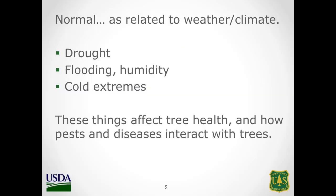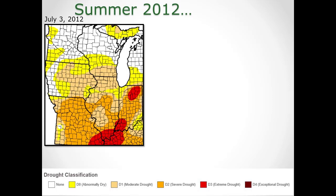I want to talk about what's normal as it relates to weather and climate. I'm not going to talk about climate change, but things outside of normal really interact with our insect and disease problems. Drought is huge; on some sites, flooding is huge. Even the distribution of rainfall and how long leaf surfaces are wet in the spring matters. Rainfall patterns that differ from normal can allow outbreaks of different disease problems. And cold extremes can limit some of our species.